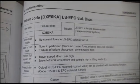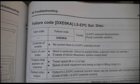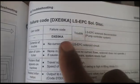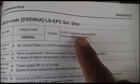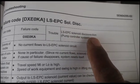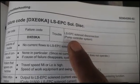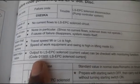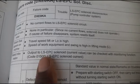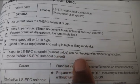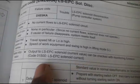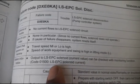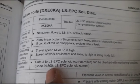The code is DX E0KA. It means LS EPC solenoid open circuit, so I have to troubleshoot this code. Using the shop manual, this is the description of the code: DX E0KA, LS EPC solenoid valve — failure code. The LS EPC solenoid is related to the pump control system. We can also check the current of the solenoid; the output to the LS EPC solenoid current can be checked with monitoring function code 01500, LS EPC solenoid current.